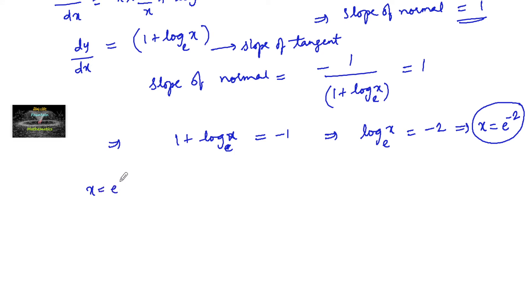Substituting x equals e to the power of minus 2 into y equals x log x: y equals e^(-2) log e^(-2), which equals minus 2 e to the power of minus 2, since log e to the base e equals 1. So the point is (e^(-2), -2e^(-2)).